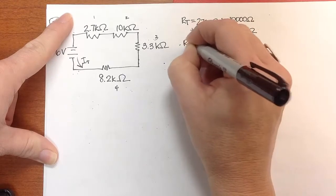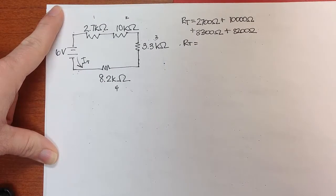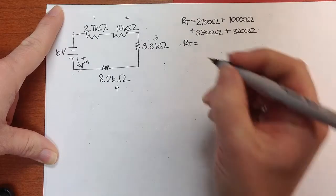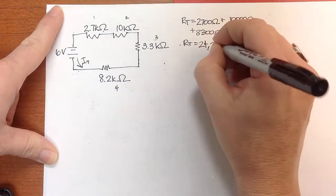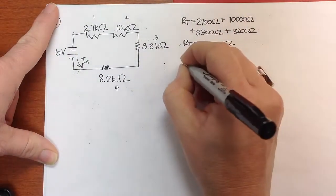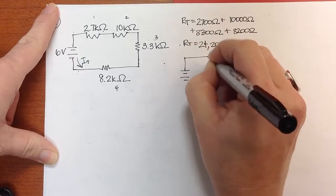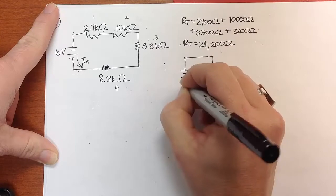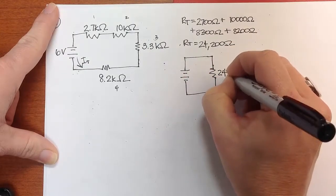My total resistance is going to be equal to 24,200 ohms. Now, to find my, basically, I've reduced the circuit to be this thing now. Maybe I didn't do a good job of this on the last problem, sorry about that.